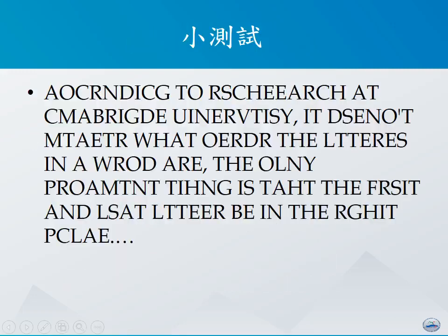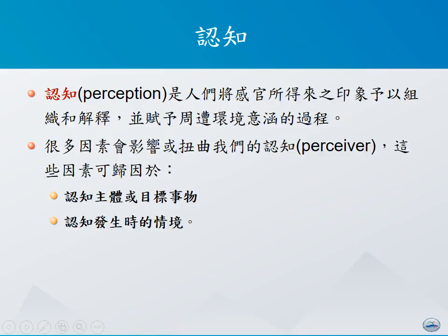谈完了人格跟情绪的问题之后，接下来让我们先休息一下，做一下小测验。请你看看以下这段文字，告诉我这段文字到底在讲什么东西。如果你念到的是像这样子的答案：「According to research at Cambridge University, it doesn't matter what other the letters in the world are, the only prominent thing is that the first and the last letter be in the right place.」这段文字事实上是字母前后错字，并且用大写的方式来呈现，如果你可以快速地把这样子的东西给读清楚，代表你可能有较强的认知能力。